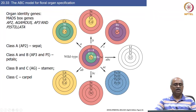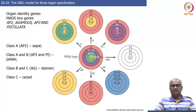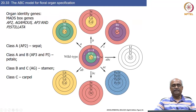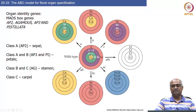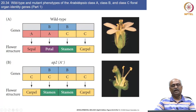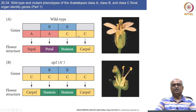These are the four concentric whorls. If A alone is expressed it becomes sepal; if A and B are expressed the next concentric whorl forms petals; if B and C are expressed it becomes stamen; and if C alone is expressed it becomes carpel. In the wild type you therefore have A alone, A+B, B+C, and C producing sepal, petal, stamen, and carpel respectively.